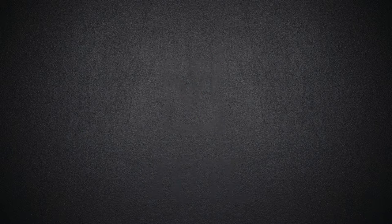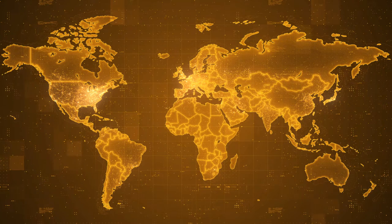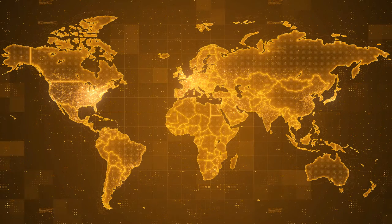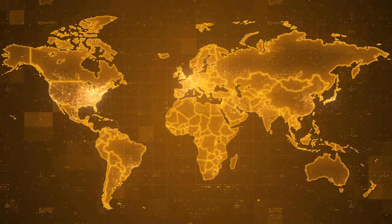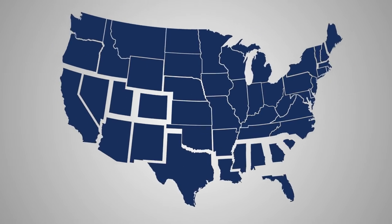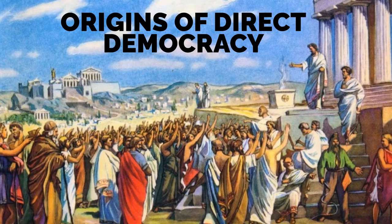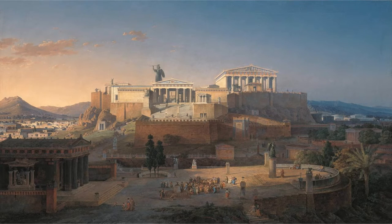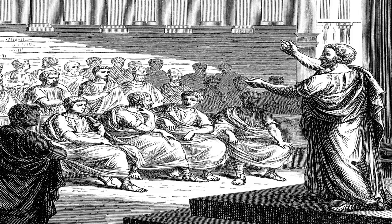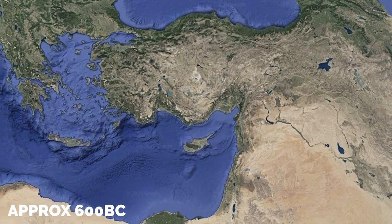Referendums in most countries are fairly uncommon, with most countries only having a handful over their entire existence. Other countries, like the United States, leave this to the state system. The ancient Athenians are the architects of democracy — most forms of government around the world at this time were ruled by a monarchy or an oligarchy.